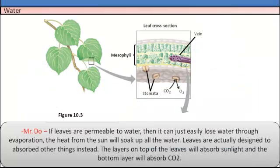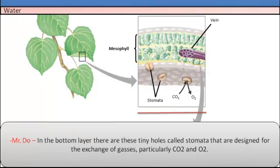If leaves are permeable to water, then it can just easily lose water through evaporation. The heat from the sun will soak up all the water. The leaves are actually designed to absorb other things instead. The layers on the top leaves will absorb sunlight, and the bottom layer will absorb carbon dioxide. In the bottom layer, there are these tiny little holes called stomata that are designed for the exchange of gases, particularly CO2 and O2.